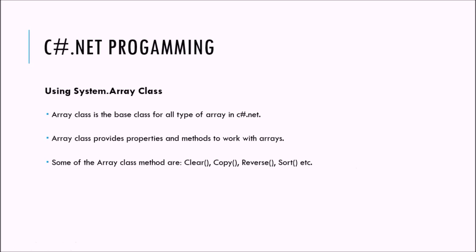Now we are going to use the System.Array class, a built-in class available in C-sharp. This class is the base class for all types of arrays in C-sharp and provides properties and methods to work with arrays. Some of the methods the Array class provides are: Clear — to clear all elements; Copy — to copy elements from one array to another; Reverse — to reverse the order of array elements; and Sort — to sort the array elements.